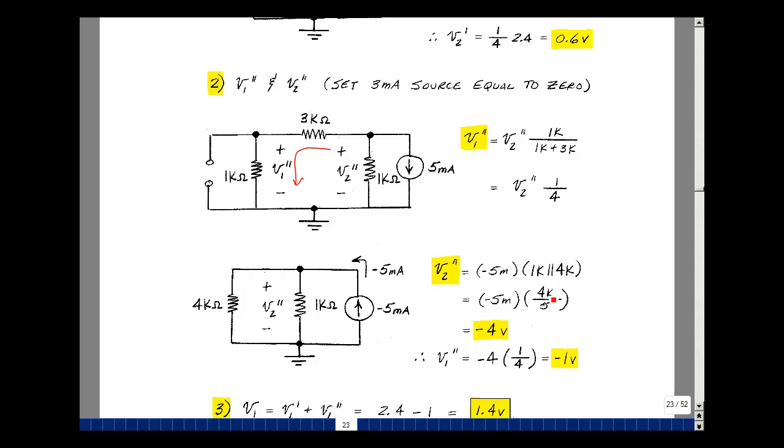1k in parallel with 4k, so product over sum gives me 4k over 5. The k's in the milli cancel. The 5's cancel. I get minus 4 volts. If V2 double prime is minus 4 volts, then V1 double prime is a quarter of that or minus 1 volt.